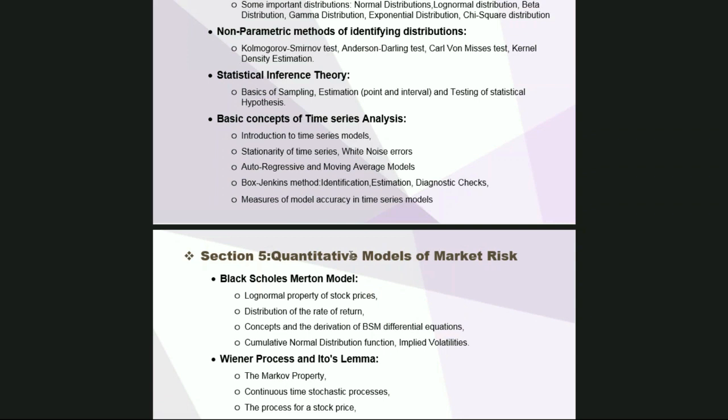We need to understand processes like Wiener processes, Brownian motion processes, and diffusion models, which are very key to understanding the basics of market risk because they form the basis of option pricing models.